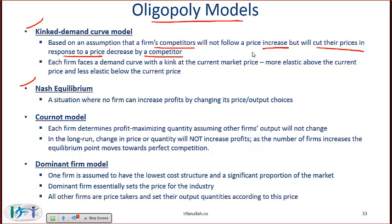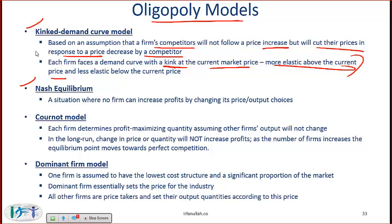Each firm faces a demand curve with a kink at the current market price. The demand curve is more elastic above the current price because if you increase your price, your demand will fall a lot since your competitor is not increasing. But if you decrease your price and the competitor also decreases, the impact on quantity demanded will not be as much. That explains the kink.